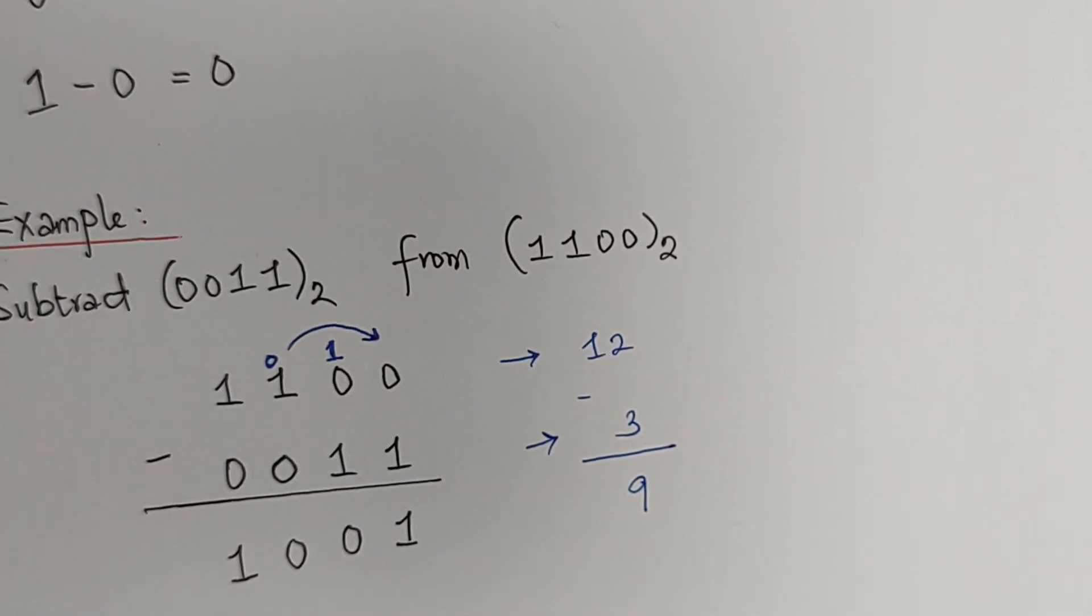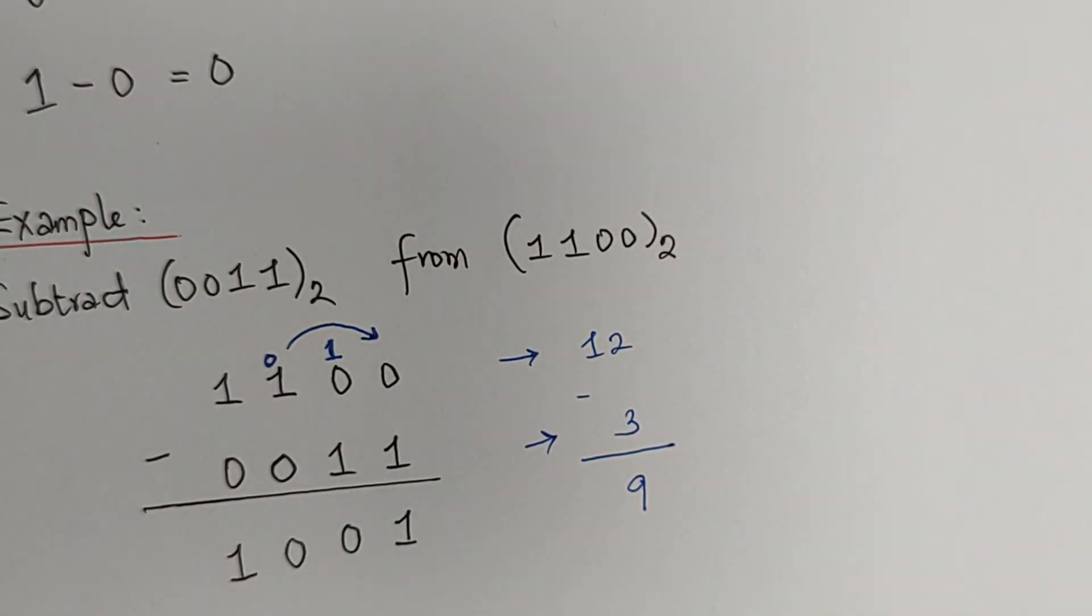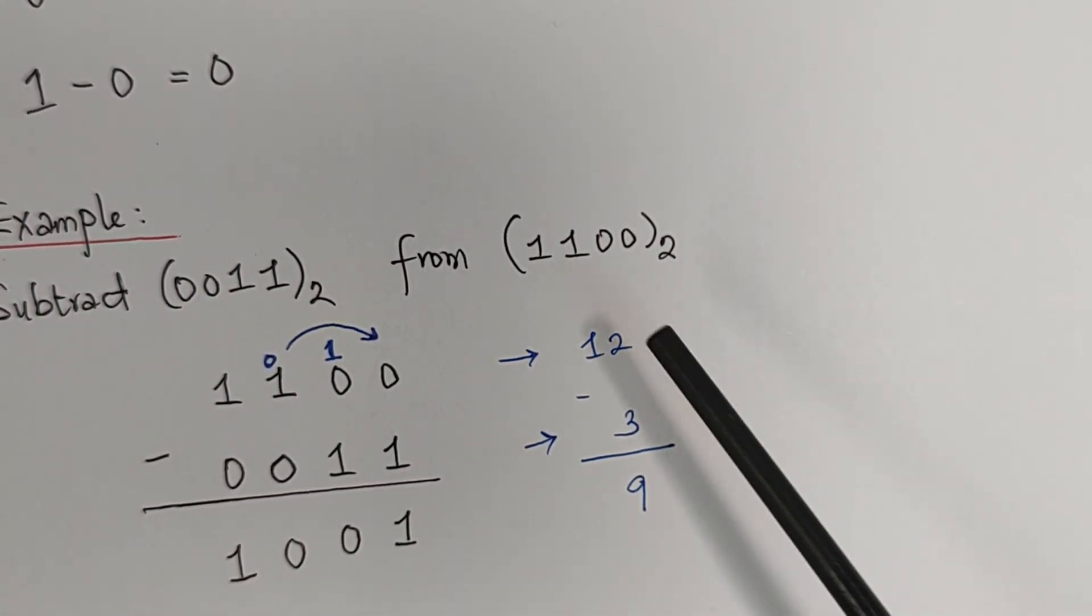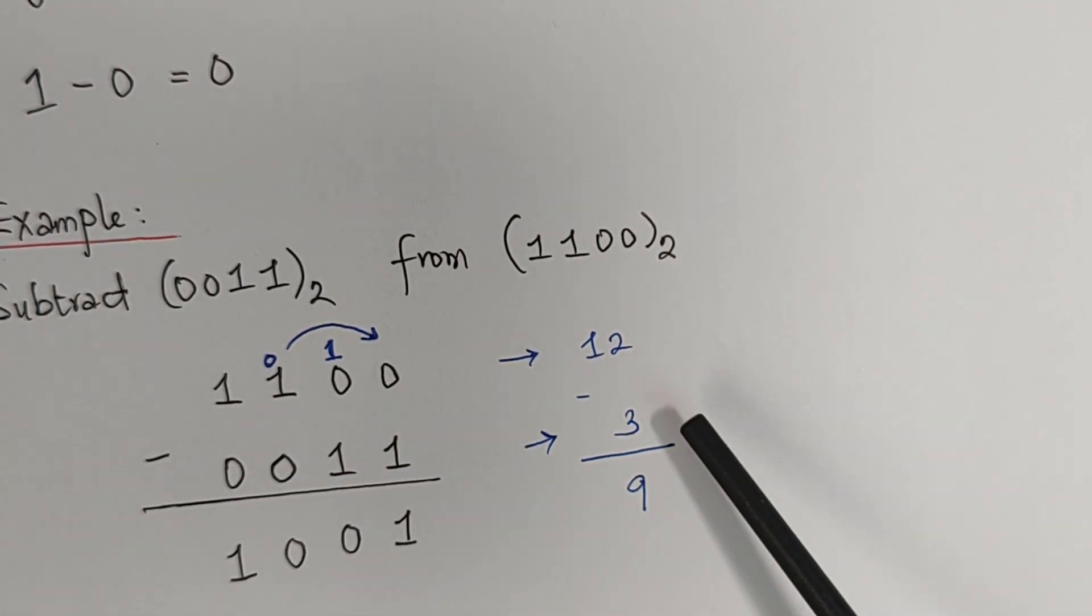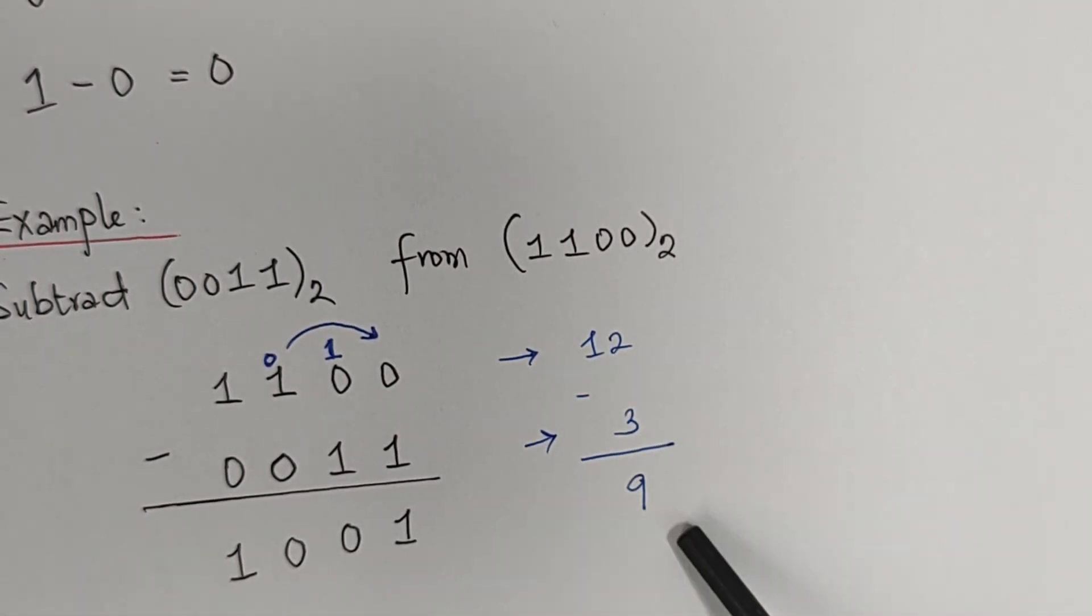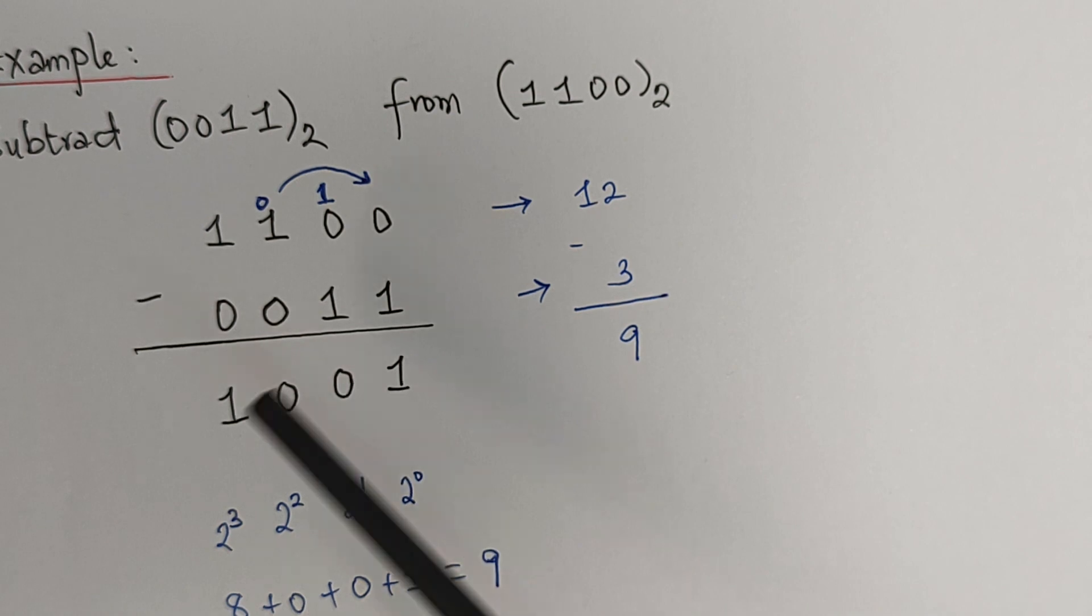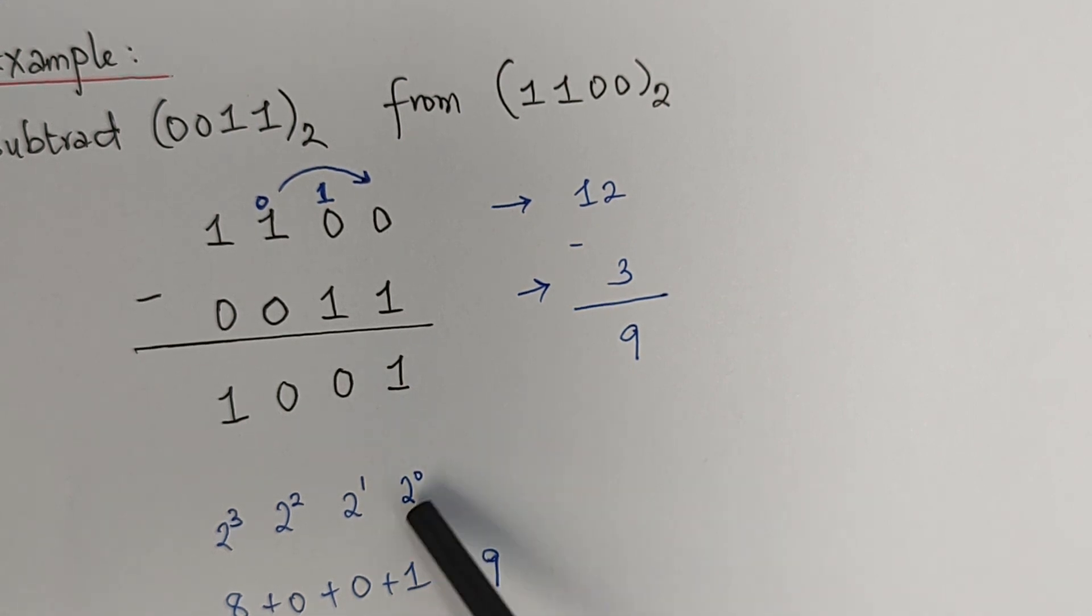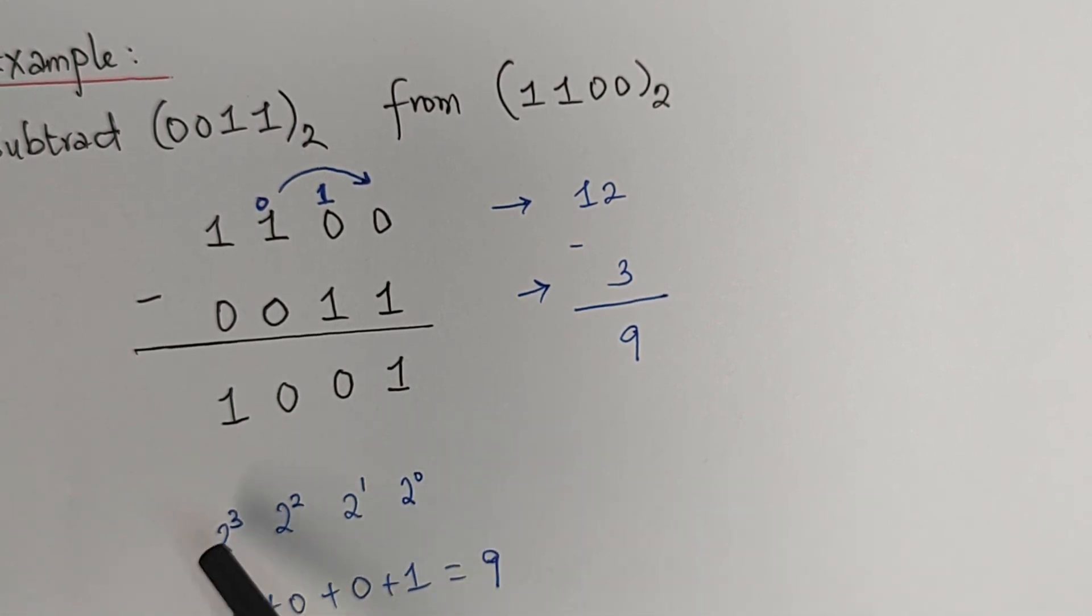Now, for us to reconfirm the values we have, let's check it also in decimal if we are correct. This literally says that when you convert this value into base 10, we are going to have 12. And for this, we are going to have 3. So 12 minus 3 will give us 9. And we can also check it from here. If we put it in base 2 with its place values, we have 2 raised to 0, 2 raised to 1, 2 raised to 2, and 2 raised to 3.